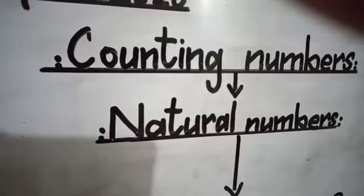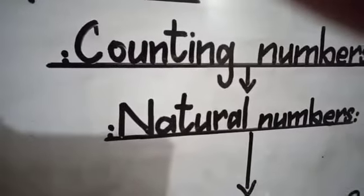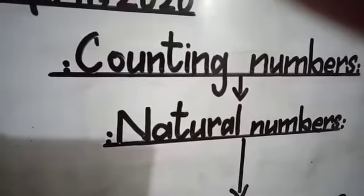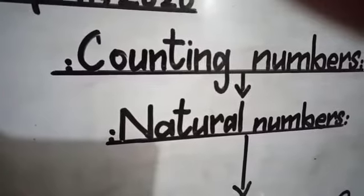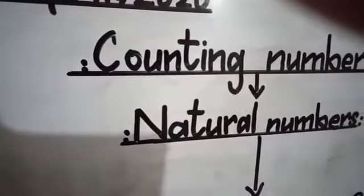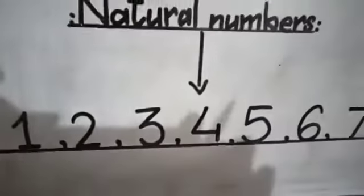We call them natural numbers because we derive them from nature. We can count things made in the world with these. That's why we call them natural numbers also. For this, I will have you do some activities. First, you see what we call counting numbers. Look at this.